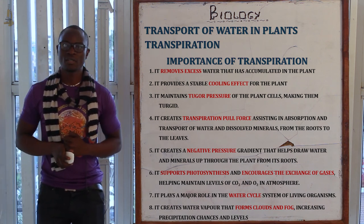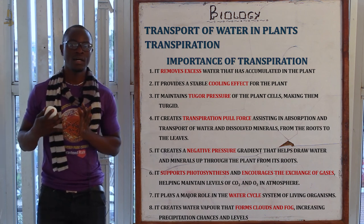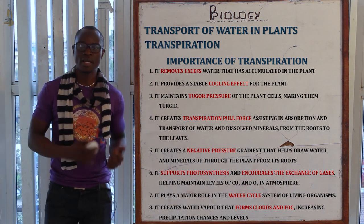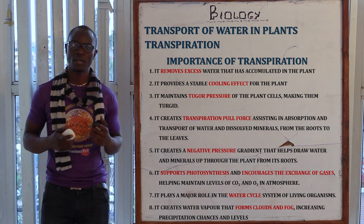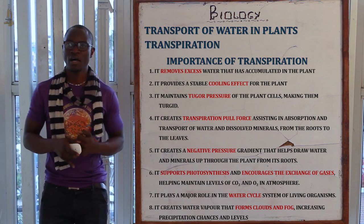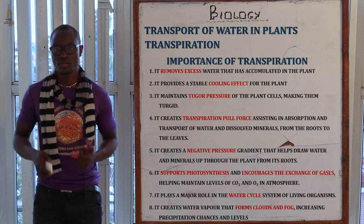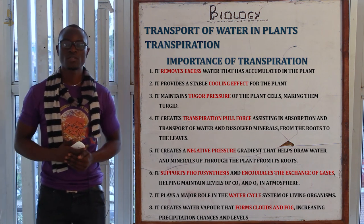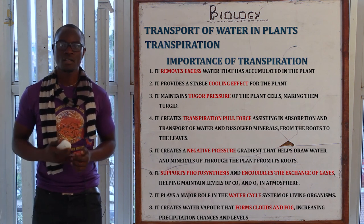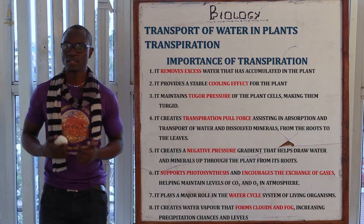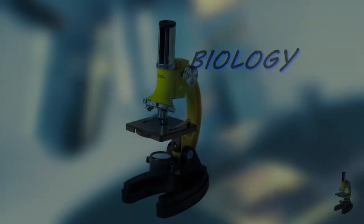Transpiration also helps maintain levels of carbon dioxide, oxygen, and water vapor in the atmosphere, and plays a major role in the water cycle. It creates water vapor that forms clouds and fog — clouds that, when saturated with enough water vapor, produce rain, contributing to the formation of nimbus clouds. That is the end of the topic: transport in plants. We will meet in the next class as we proceed to transport in animals.